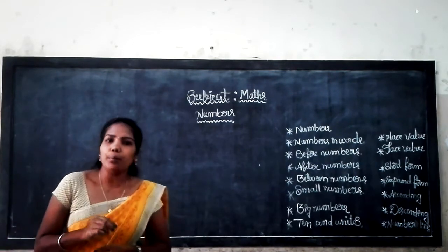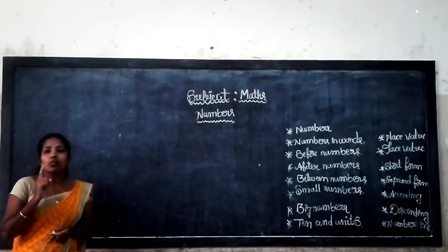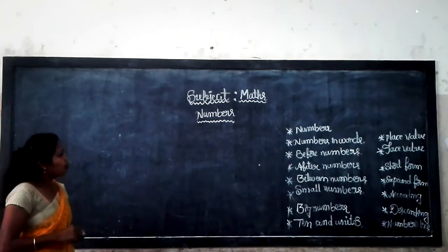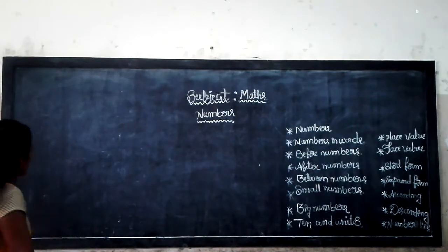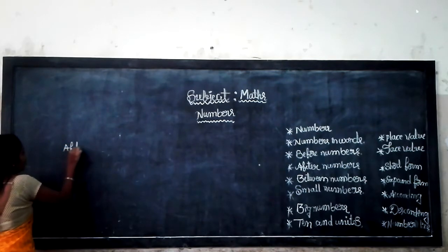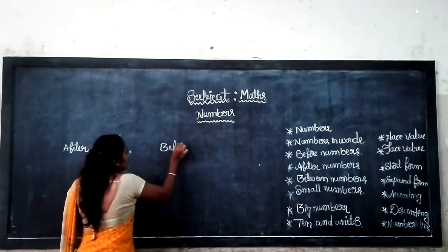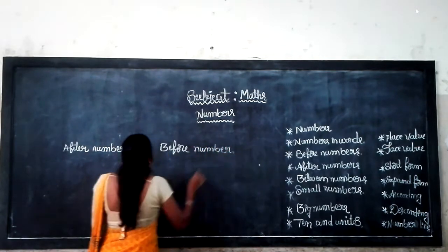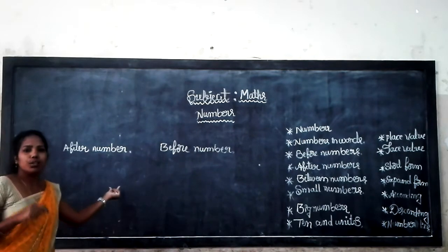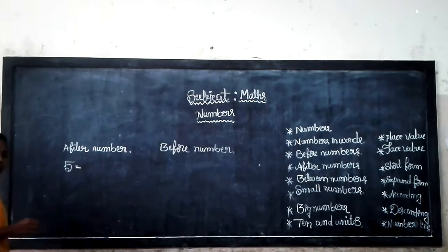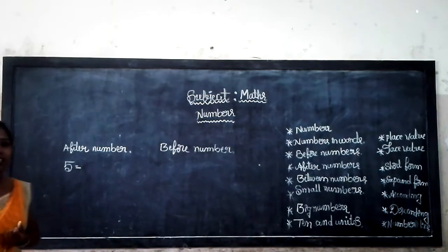Before number, after number, and between number. Dear students, if you want to get the after number, you just add 1 to the given number. If you want to get the before number, you just subtract 1 from it. For example, after number of 5: you just add 1, so 5 plus 1 equals 6.